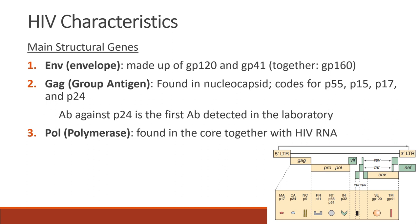We have the main structural genes. First, we have ENV or the envelope, made up of GP120 and GP41, collectively called GP160. Second is GAG or the group antigen, found in the nucleocapsid, which codes for genes P55, P15, P17, and P24. The antibody against P24 is the first antibody detected in the laboratory. Lastly, we have POL or the polymerase, which is found in the core together with the HIV RNA.